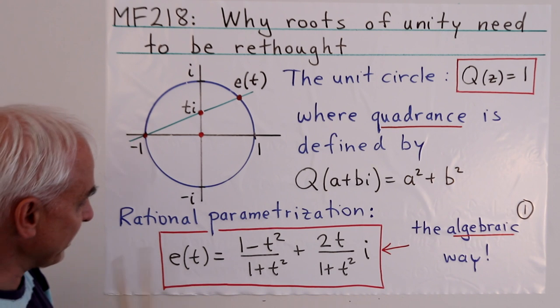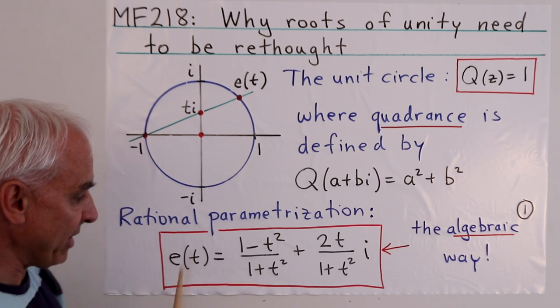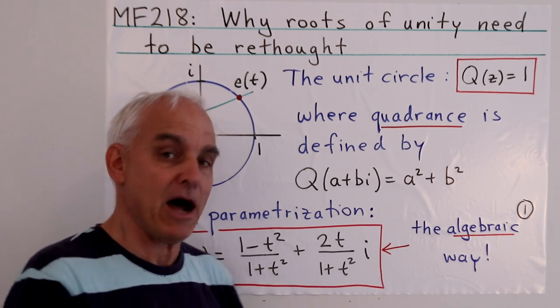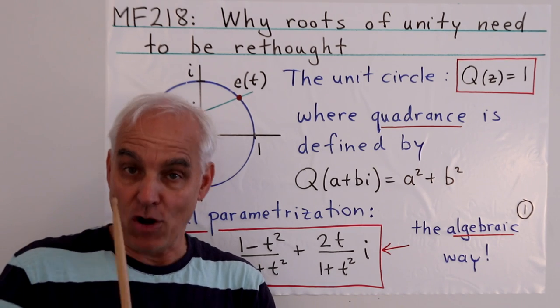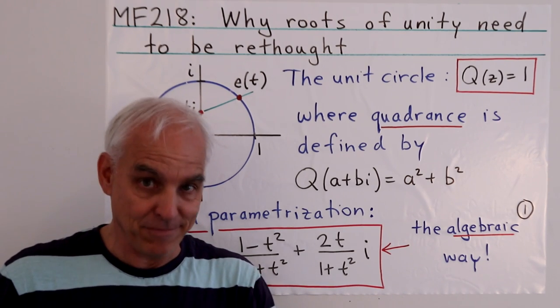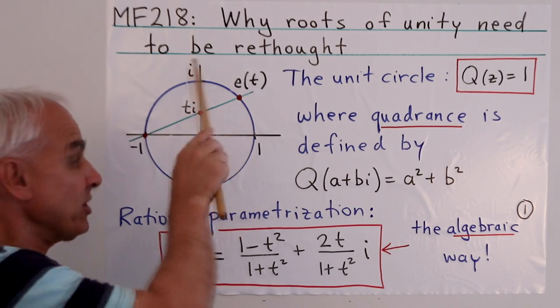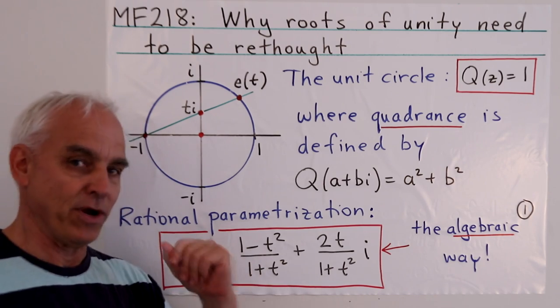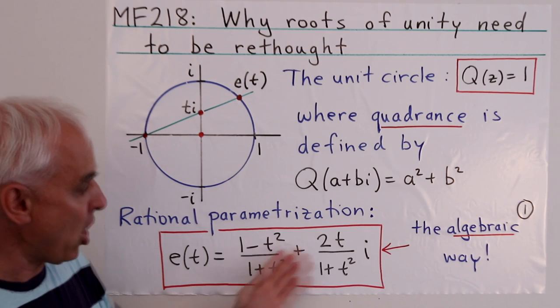Here it is in terms of complex numbers: E(t) = (1-t²)/(1+t²) + (2t)/(1+t²)i. We're rewriting something familiar, describing points on the unit circle algebraically with this as the x coordinate and this as the y coordinate, now in terms of a complex number.